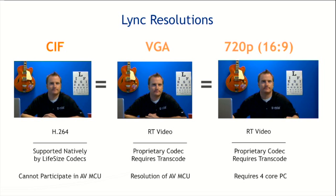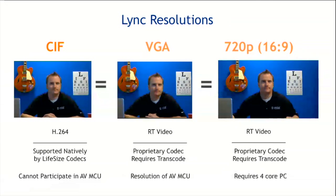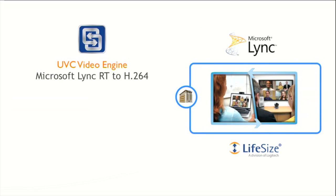One of the biggest features you pick up with RT Video in Lync is the ability to participate in an AVMCU call. An AVMCU is basically how you have a large-scale meeting with Lync where everyone sees the person that's speaking, and as that person changes, everyone sees the new speaker — you can have over 100 people on that call. With this product, you can now have a LifeSize endpoint participate in one of those large Lync calls. That product is the UVC Video Engine.